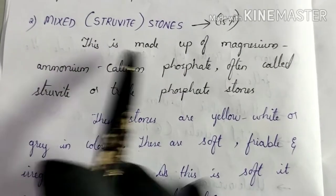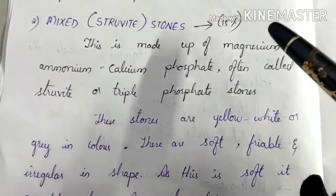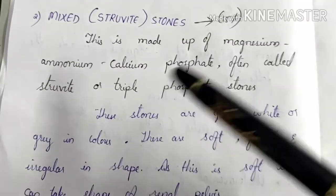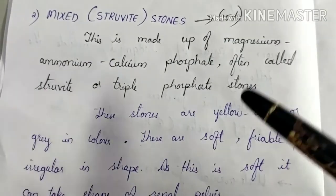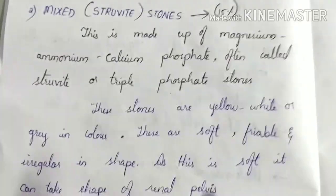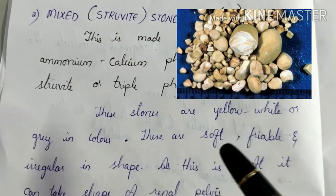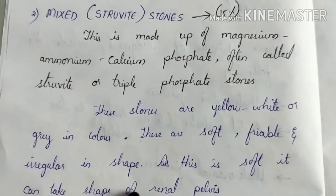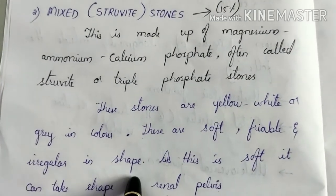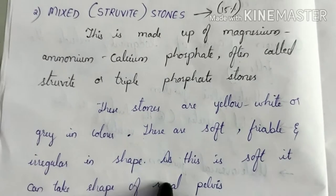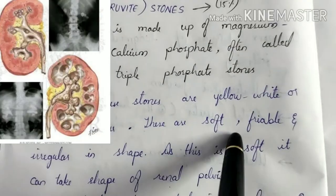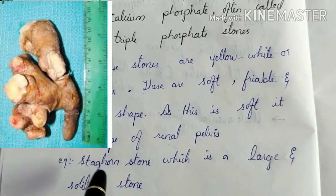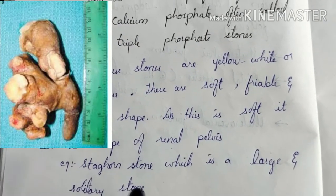Next are mixed stones, also called struvite stones, accounting for around 15% of urinary calculi. These stones are composed of magnesium, ammonium, calcium, and phosphate — also called triple phosphate stones. They are yellow, white, or grey in color and very soft compared to calcium oxalate stones (also called mulberry stones). They are friable and irregular in shape, growing in the renal pelvis in the minor or major calyces, acquiring that shape. They result in the formation of a staghorn stone, which is large and single.